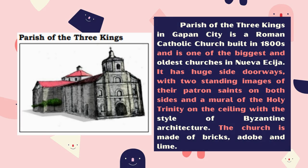Parish of Three Kings in Gapan City is a Roman Catholic church built in the 1800s and is one of the biggest and oldest churches in Nueva Ecija. It has huge side doorways with two standing images of their patron saints on both sides and a mural of the Holy Trinity on the ceiling in the style of Byzantine architecture. The church is made of bricks, adobe, and lime.